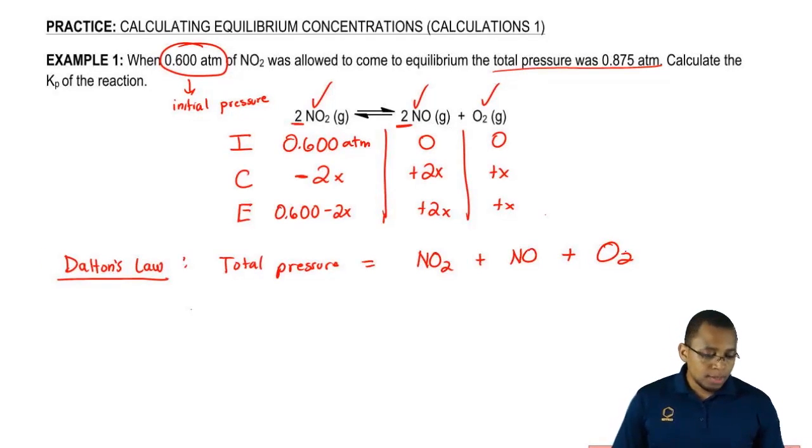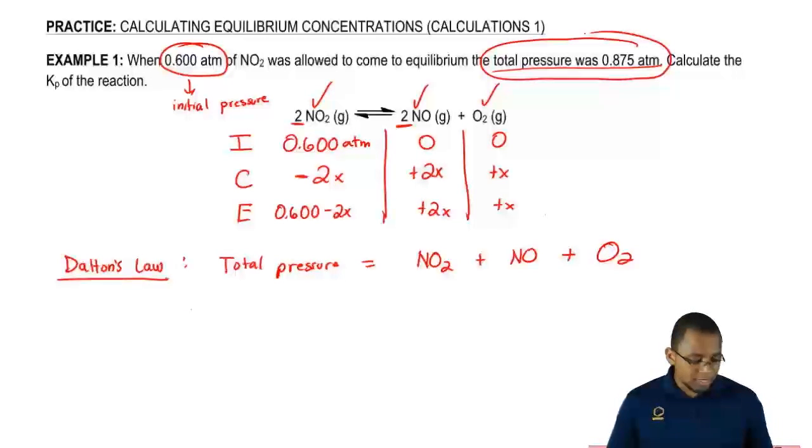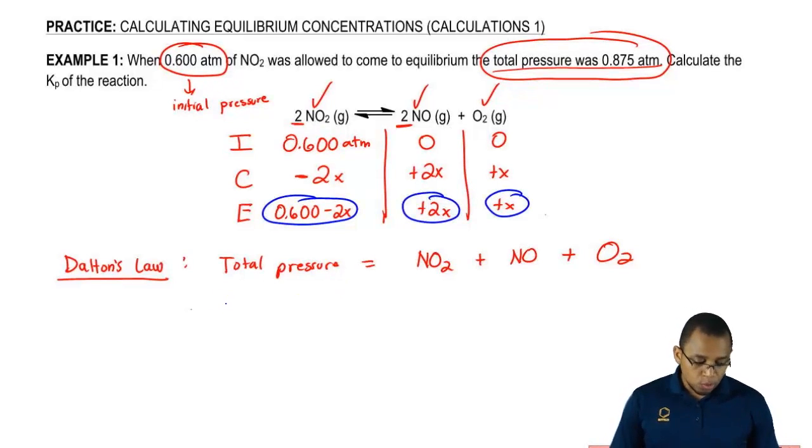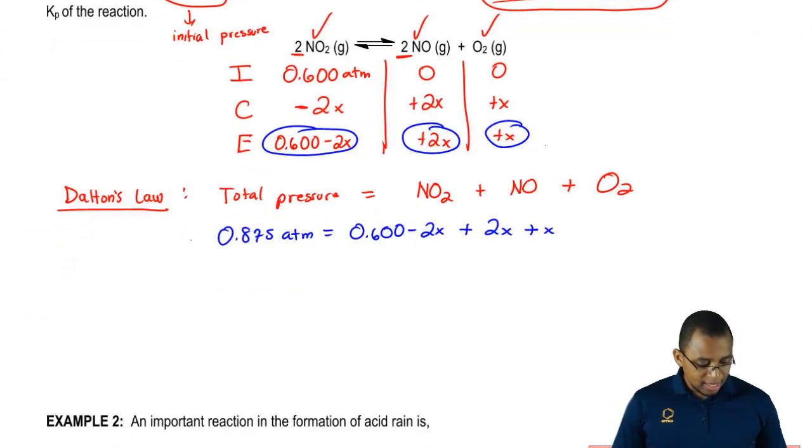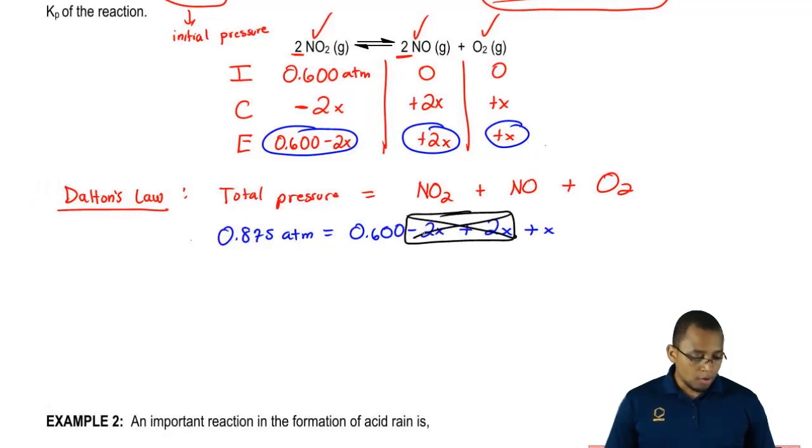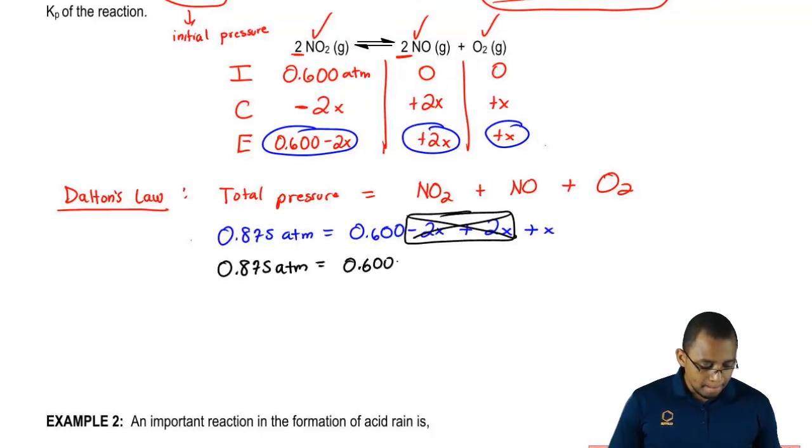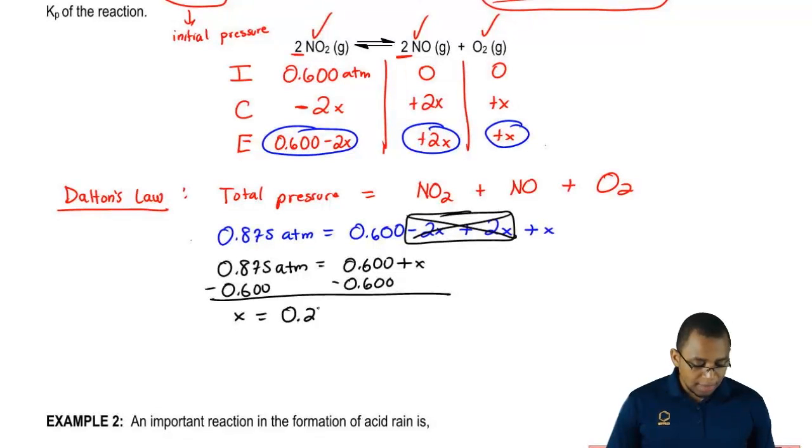And at equilibrium, that's my equilibrium total pressure. So what we're going to do here is say at equilibrium, each of these gases is equal to each of these equations. So at equilibrium, our total pressure is 0.875 atmospheres. At equilibrium, NO2 is 0.600 minus 2x. At equilibrium, NO is 2x. At equilibrium, O2 is just x. We're going to say that this negative 2 and this positive 2 basically cancel each other out. So our equation becomes 0.875 atmospheres equals 0.600 plus x. We need to isolate x here so we're going to subtract 0.600. So x here equals 0.275 atmospheres.